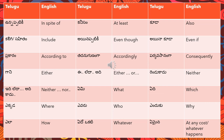'Gani ante' means 'either'. 'E leda adhi ante' means 'either or'. 'Rendu kaadu ante' means 'neither'. 'E dhi leda adhi kaadu' means 'neither nor'. Please remember either/or and neither/nor - these are very important. There will definitely be dialogues where you come across these, and it is important to know the correct translation.